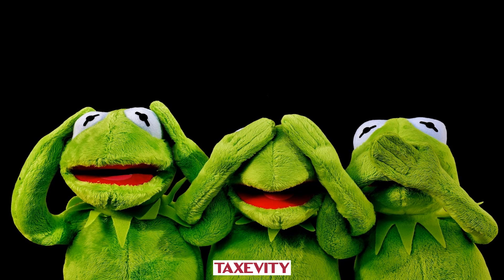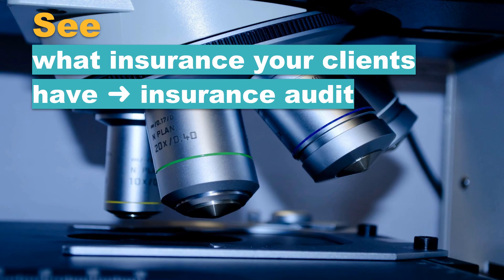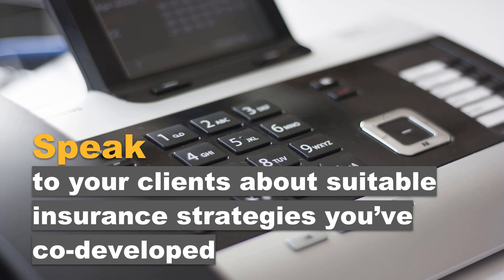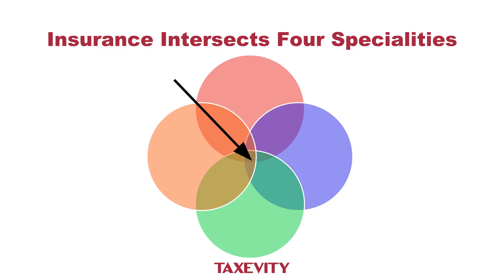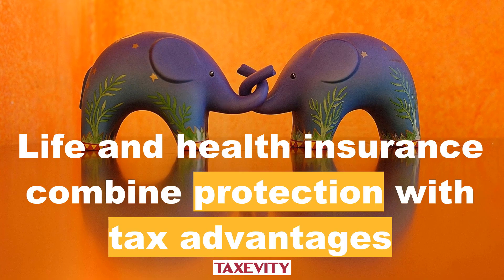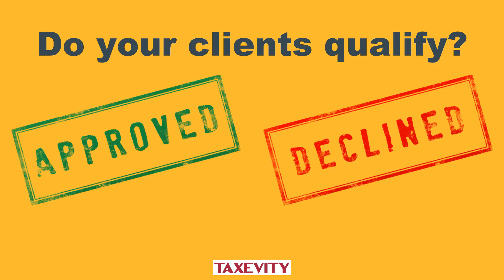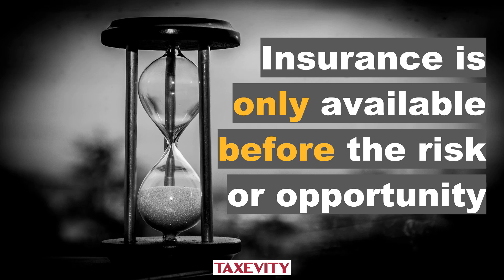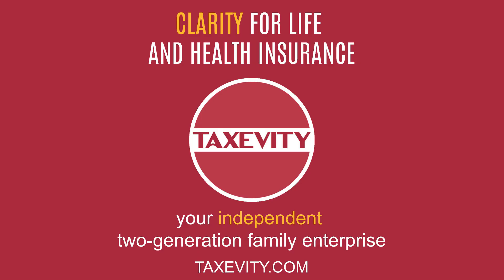When it comes to insurance, you can ignore it or you can be proactive instead. You can see what insurance your clients have through an insurance audit. You can hear the concerns that your clients have — how could insurance help? You can speak to your clients about suitable insurance strategies you have co-developed. Insurance intersects four specialties: the world of risk, where actuaries specialize; the world of tax, where accountants specialize; the world of investing, where investment advisors have special expertise; and the world of law — insurance is a contract. Life and health insurance combine protection with tax advantages. Do your clients qualify? Pre-existing conditions can affect coverage, and insurance is only available before the risk or opportunity. If you have other questions or options, please feel free to contact us directly.